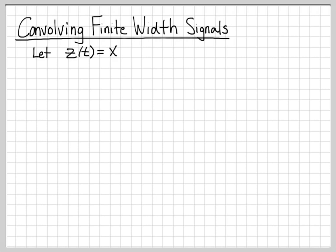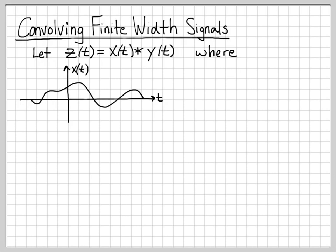So let's find a signal z of t, and z of t is equal to x of t convolved with y of t. In this example, x of t is going to be this signal. We're not really going to go through the nitty gritty details of actually evaluating the convolution integral. We're just more interested in some very general results that occur when you convolve a signal x of t that only exists on the time axis from some starting position to some stopping time.